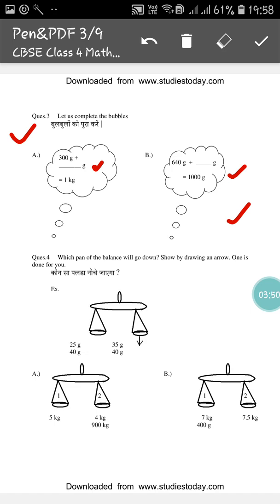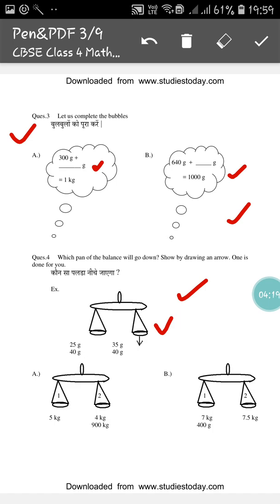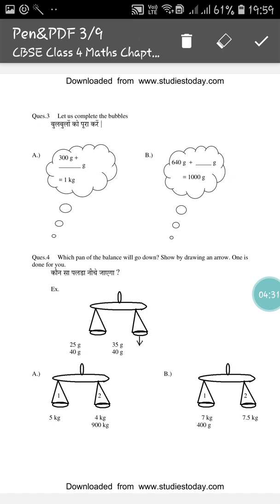Question number 4 is very interesting — you have done this type of sum earlier also. Which pan of the balance will go down? By drawing an arrow, 1 is done for you. Here this pan is 25 gram plus 40 gram, that means 65 gram, and this pan is 40 gram plus 35 gram, means 75 gram. As 75 gram is bigger than 65 gram, this pan will go downward, so the downward arrow is given. In this way you have to do this for the remaining ones. Up to question 4 you have to do the sums in your maths copy.